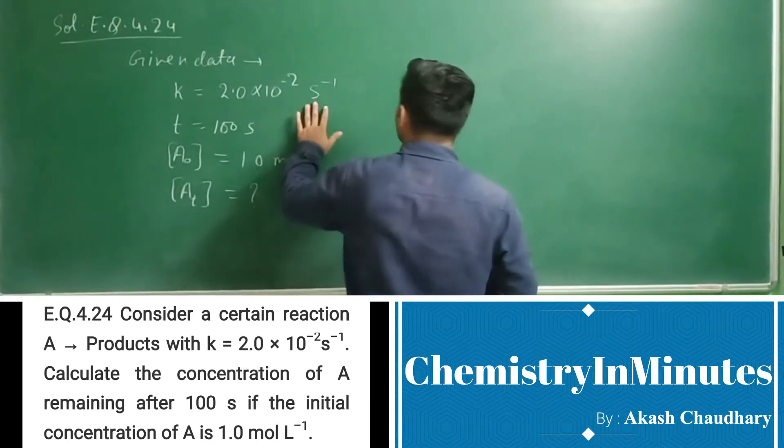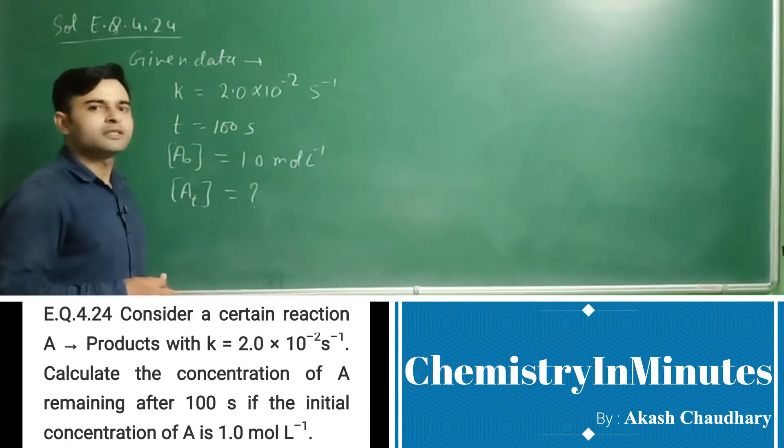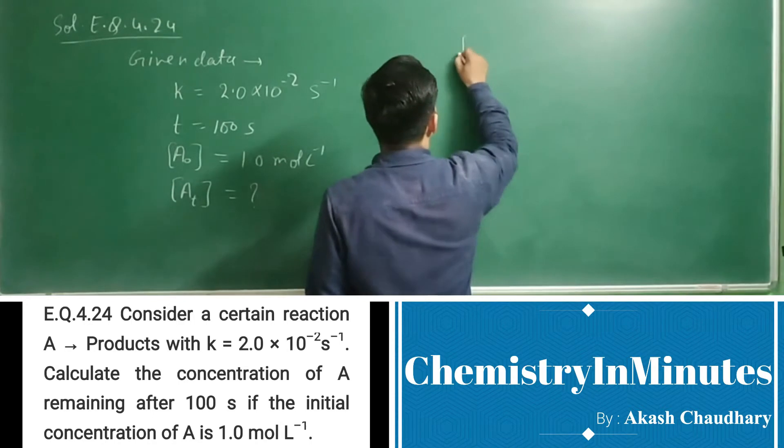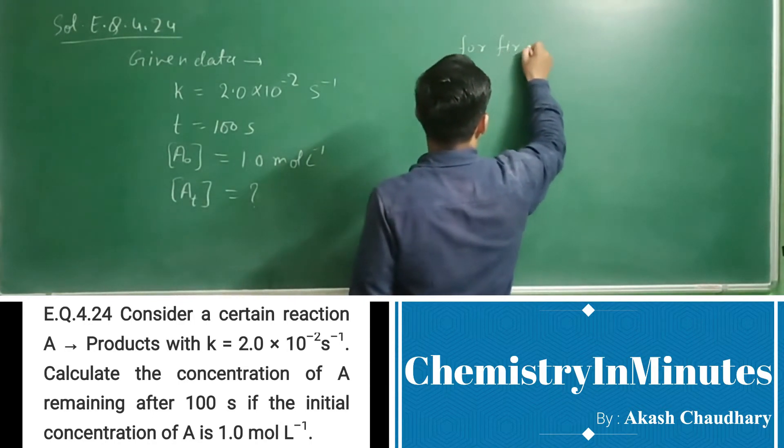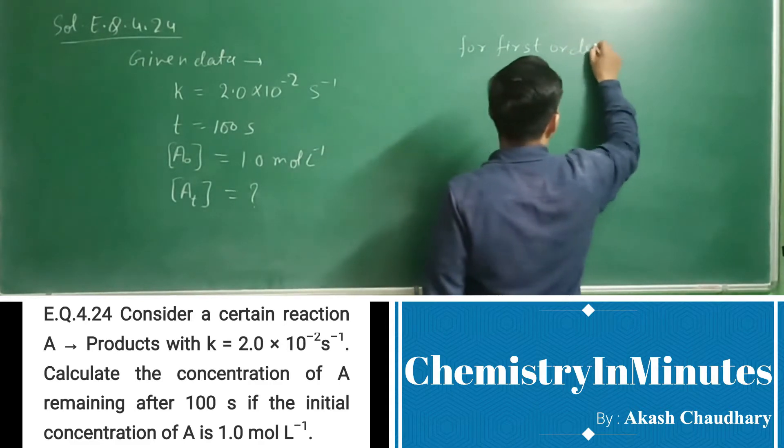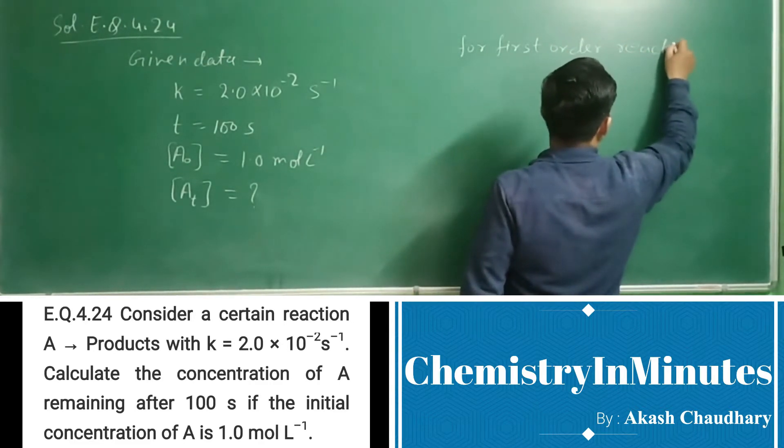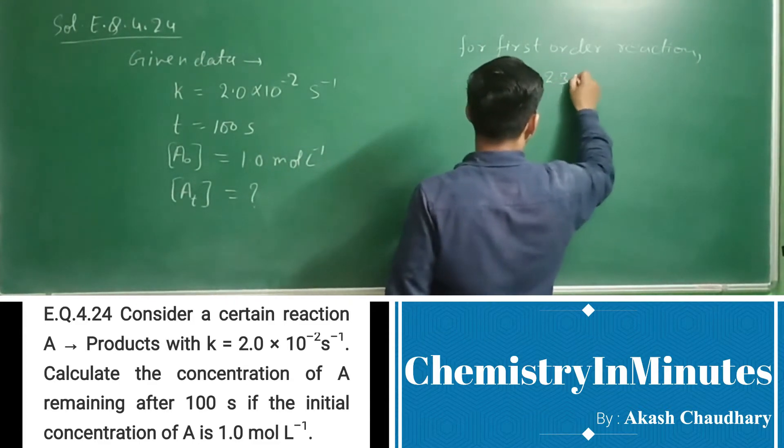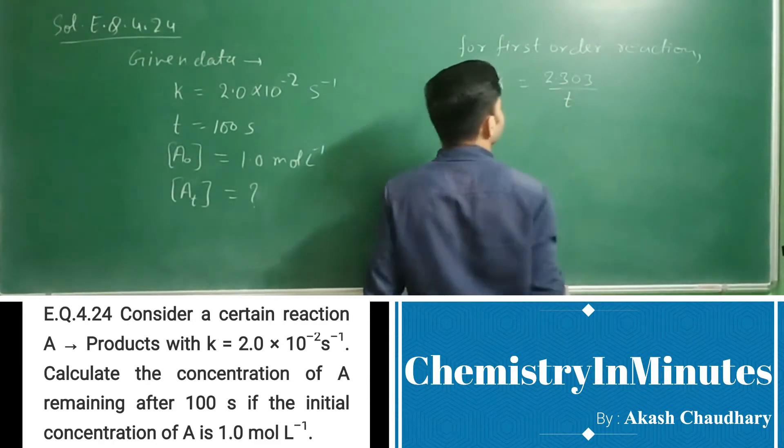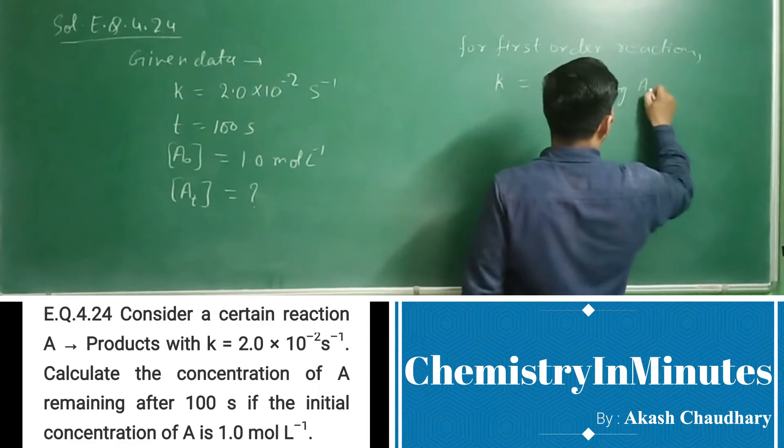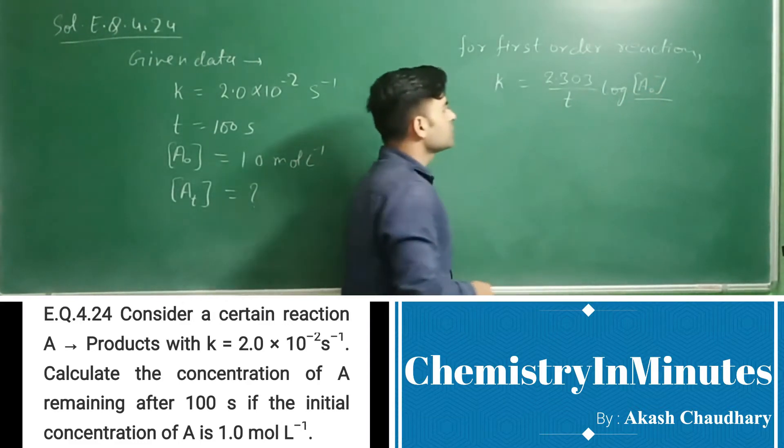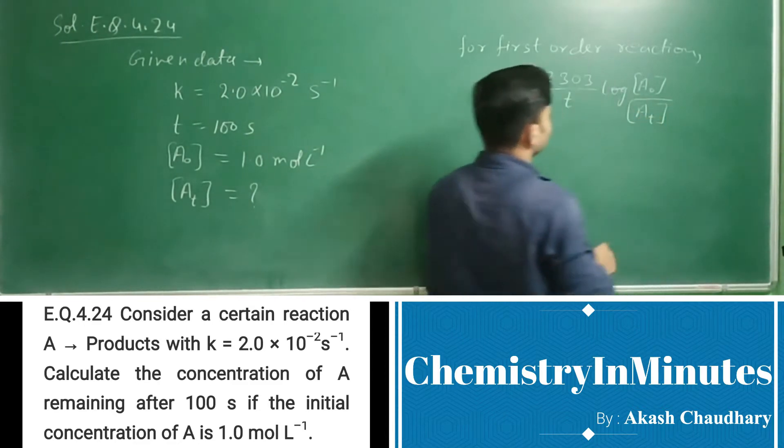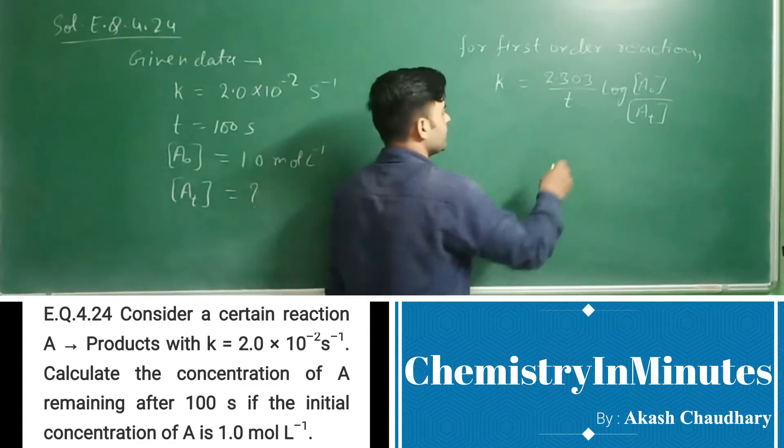From the unit of rate constant we conclude the reaction is first order, so for first order reaction: k = 2.303/t × log([A]₀/[A]_t), where [A]₀ is initial concentration and [A]_t is concentration remaining at time t.